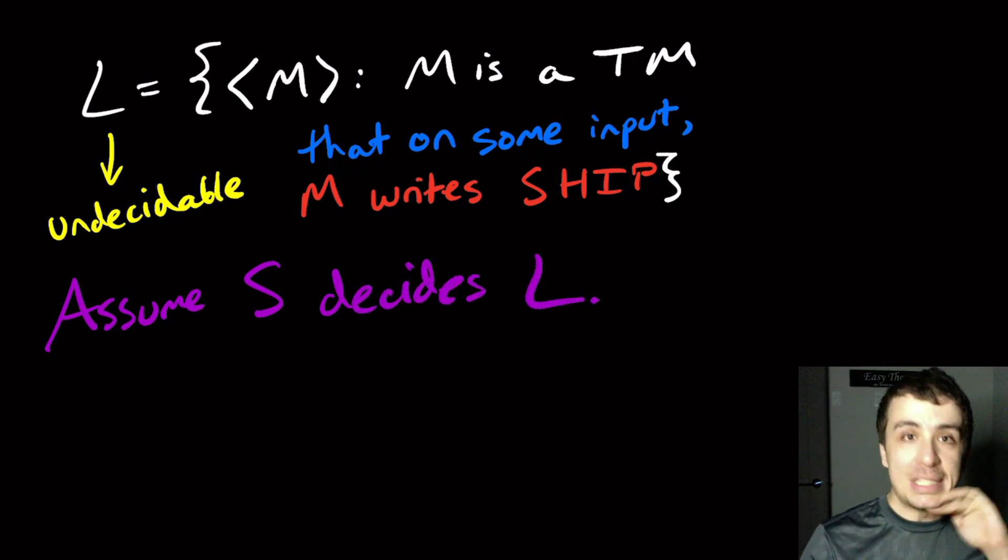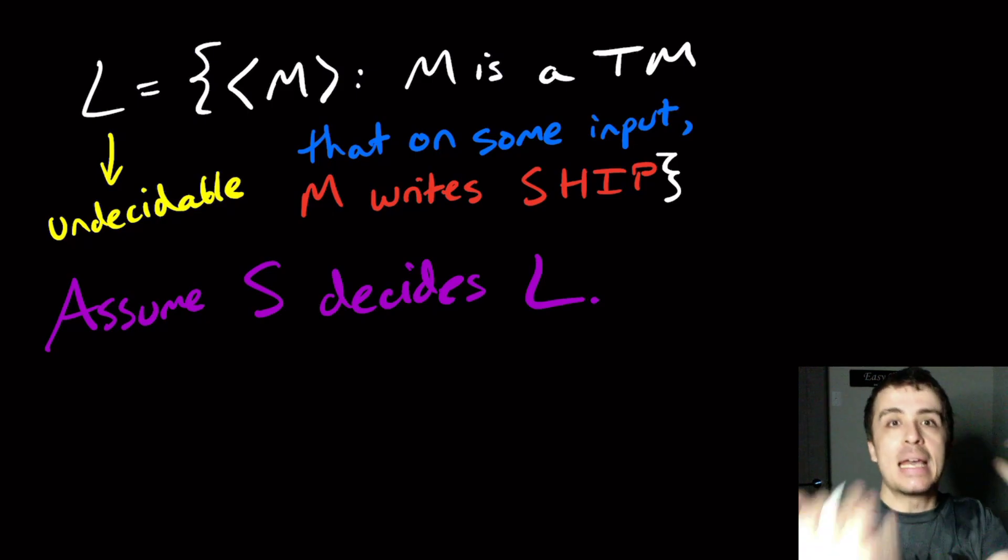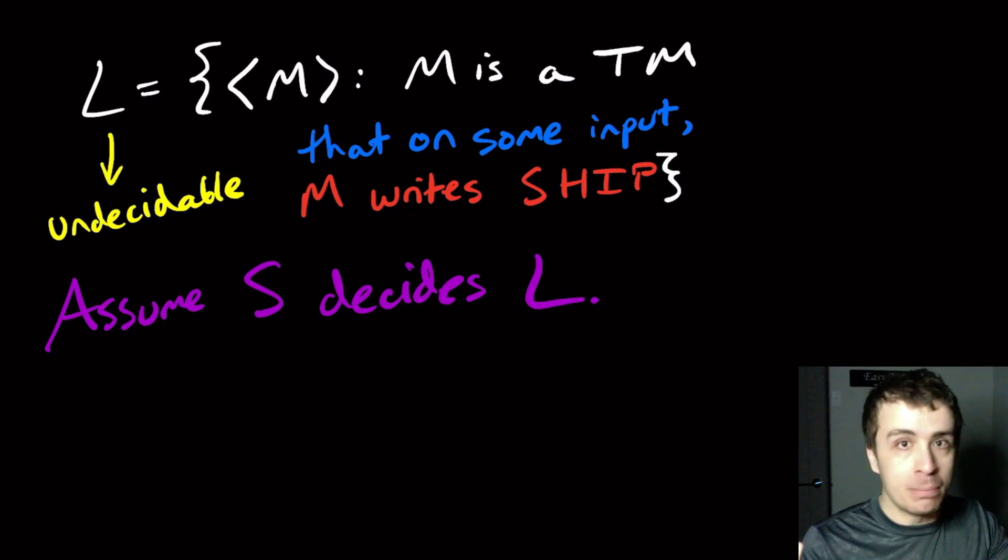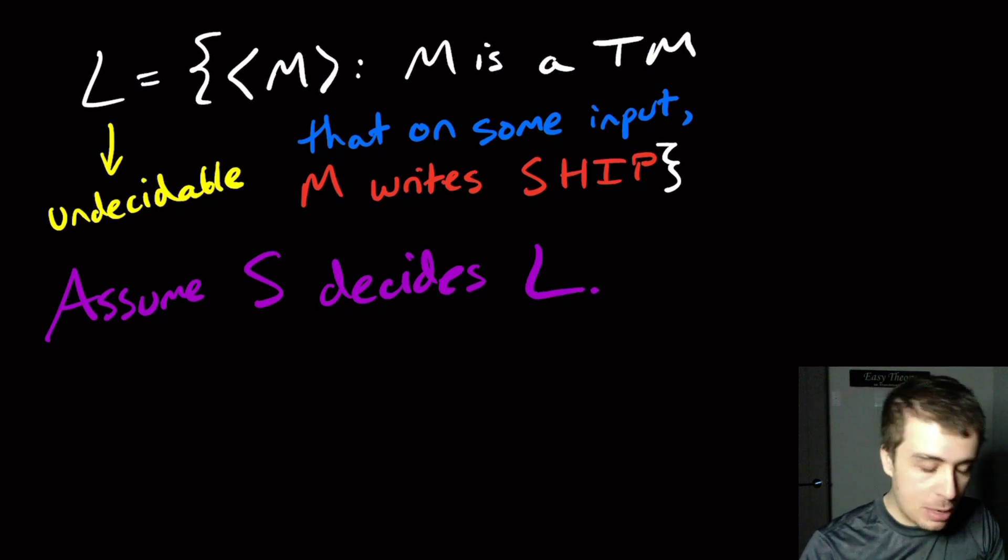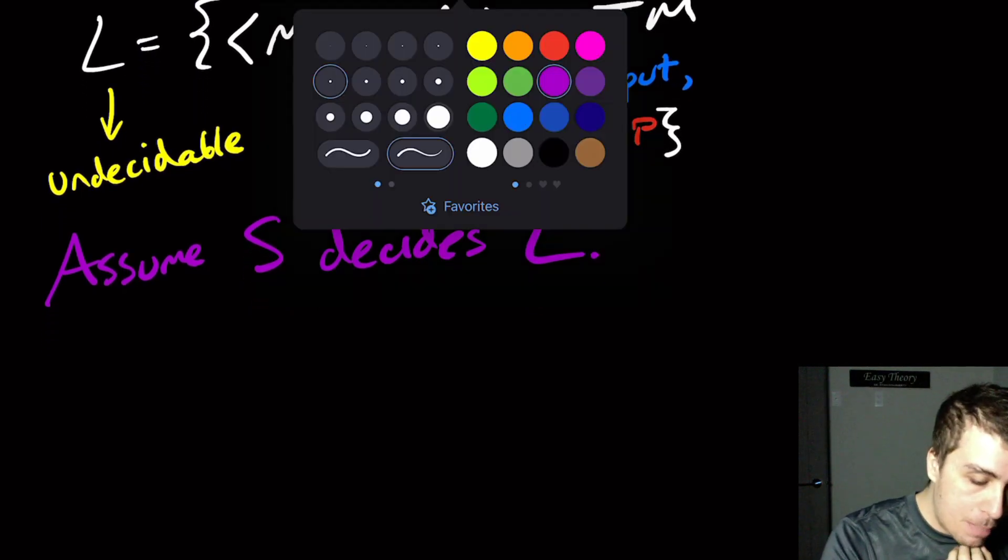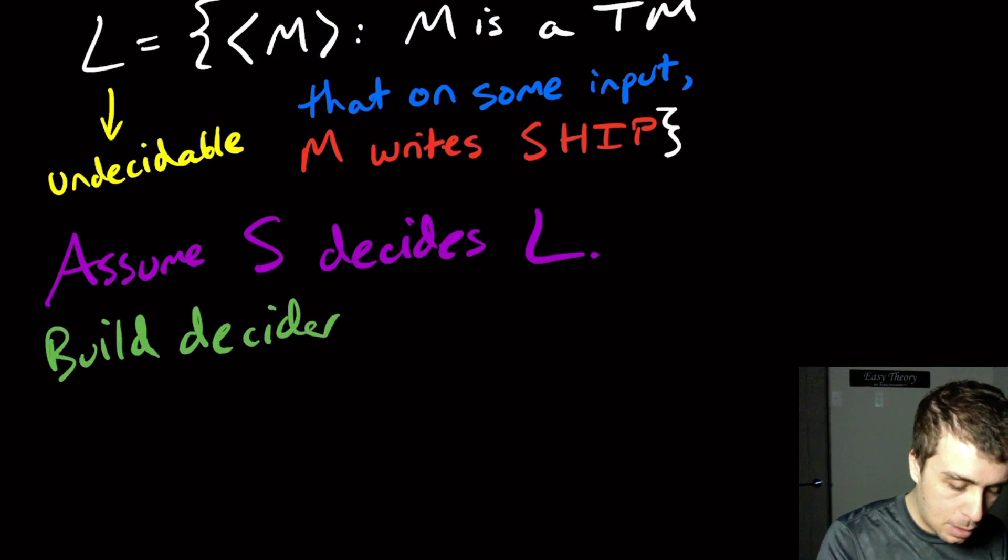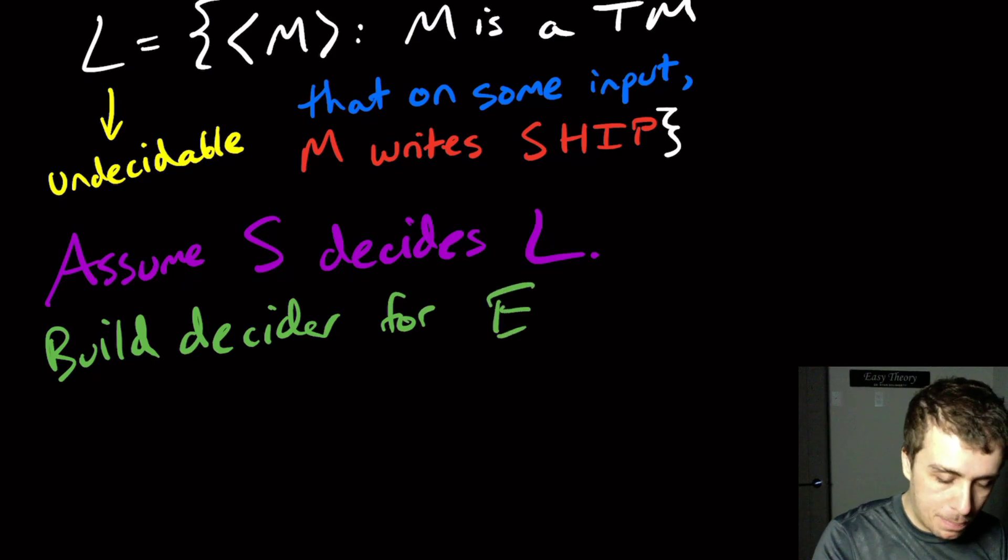S is a machine that will take an arbitrary Turing machine and figure out whether or not the ship is printed on some input string. In fact, we will prove it can't exist. But what we're going to do then is we're going to build a decider for the emptiness problem. So how's this going to work?